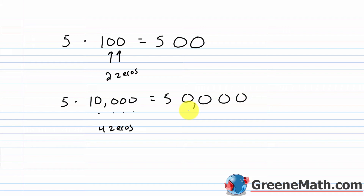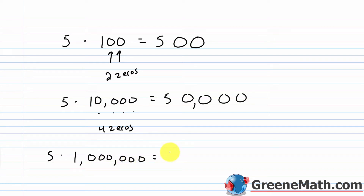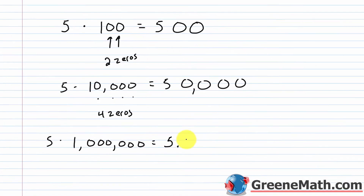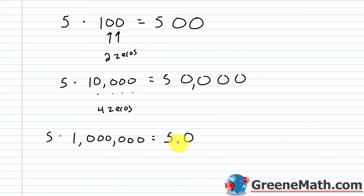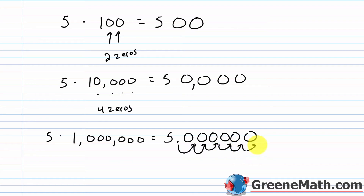Let's do one more: 5 times 1 million. There are six zeros, so I move the decimal point six places to the right and end up with 5 million.